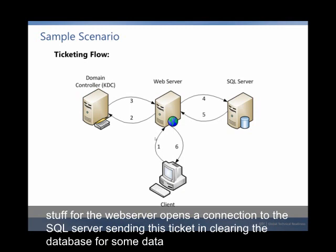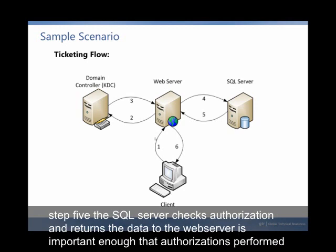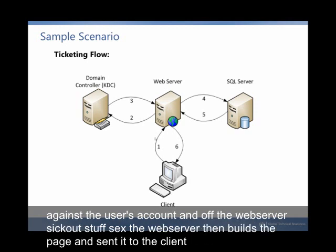Step 4: the web server opens a connection to the SQL server, sending this ticket and querying the database for some data. Step 5: the SQL server checks authorization, then returns the data to the web server. It is important to note that the authorization is performed against the user's account and not the web server's account. Step 6: the web server then builds the page and sends it to the client.